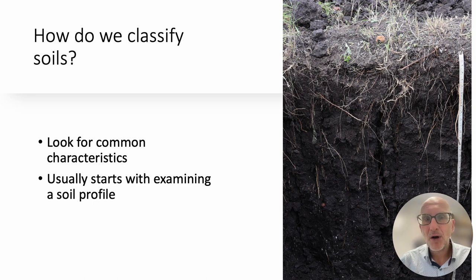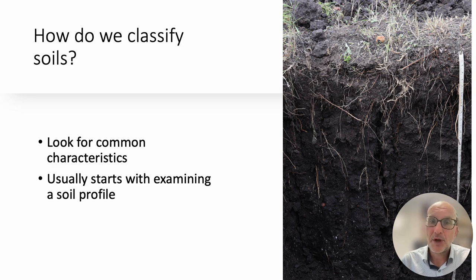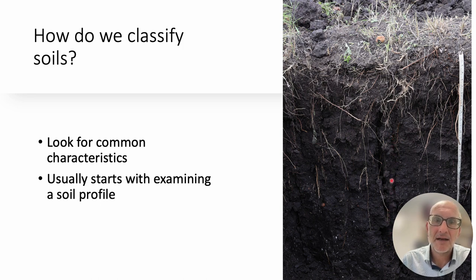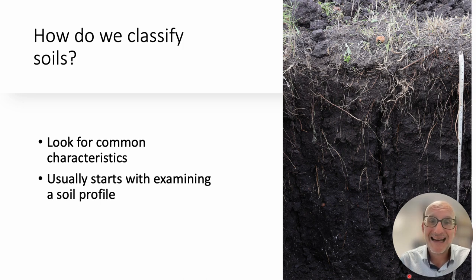So it's a really useful thing to be able to do, but how do we do it? Well, we're looking for common characteristics, and that almost always starts with thinking about a soil profile. In this case we have one from Kenya — this is a soil which is very clay rich. We call it a vertisol, and it's characterized by these very long cracks running deep down into the soil. Those cracks shrink and swell as the soil dries out and then re-wets again, and they're characteristic of this particular soil — one of the ways in which we would classify or name it as a vertisol.